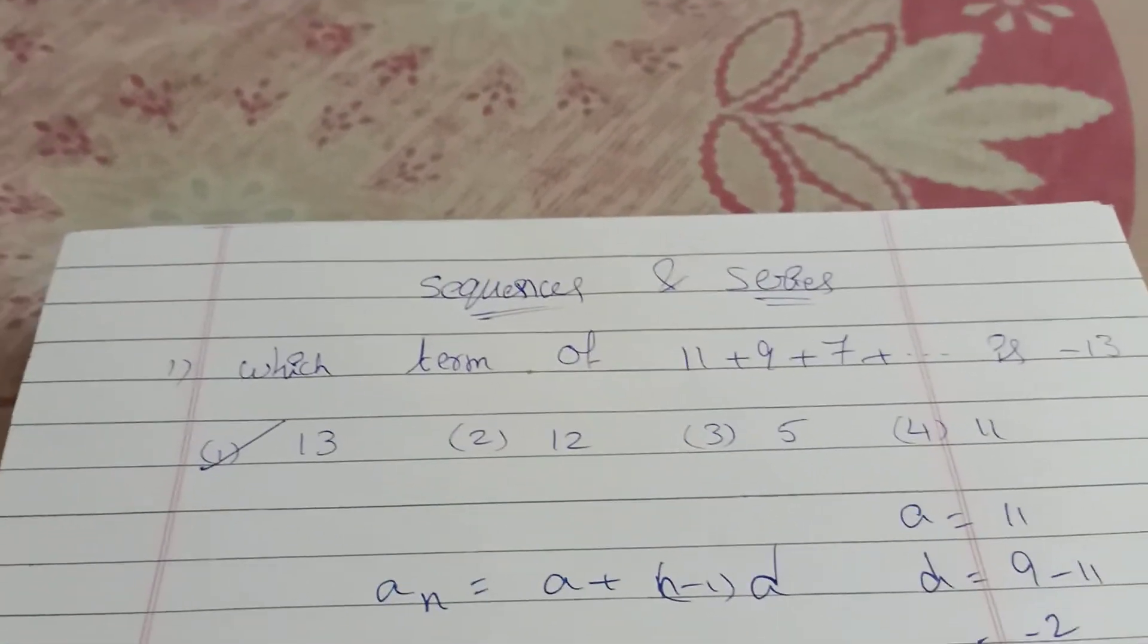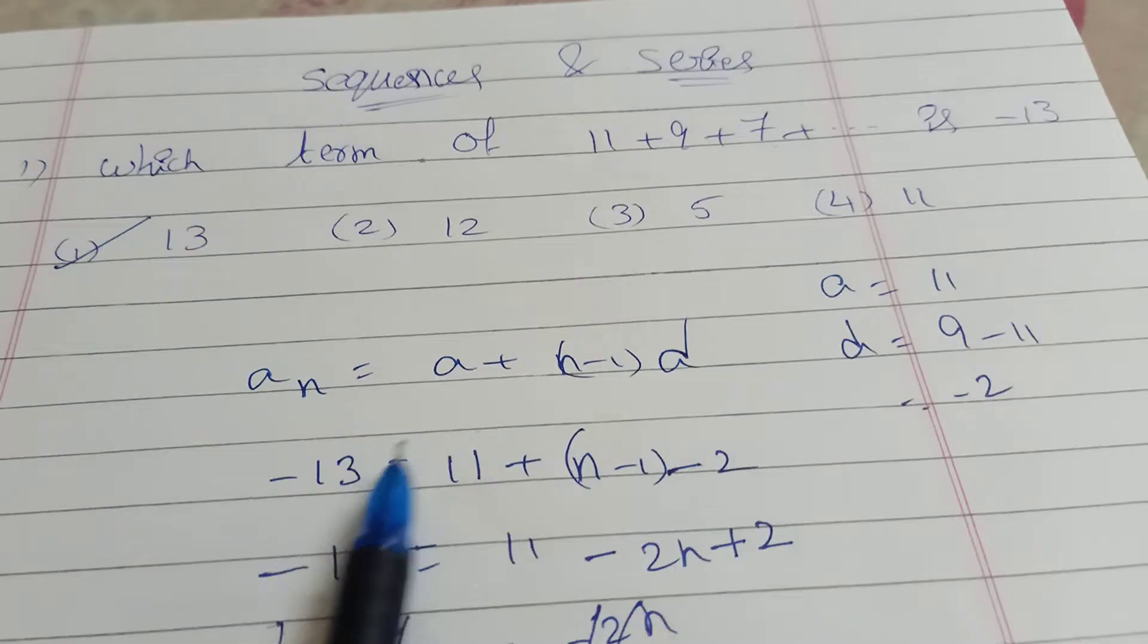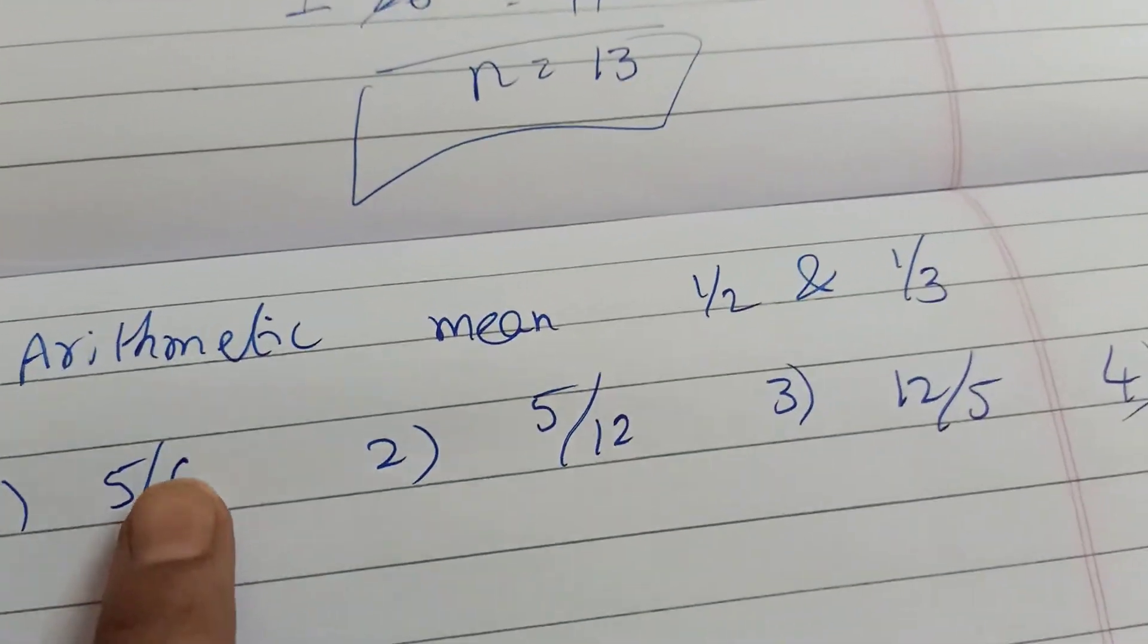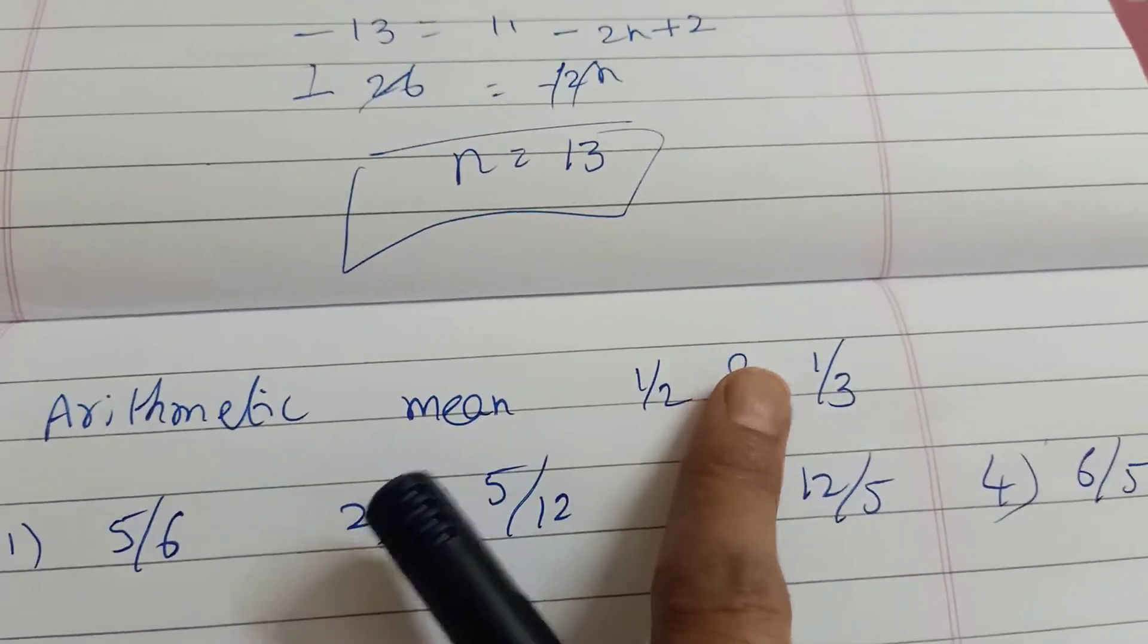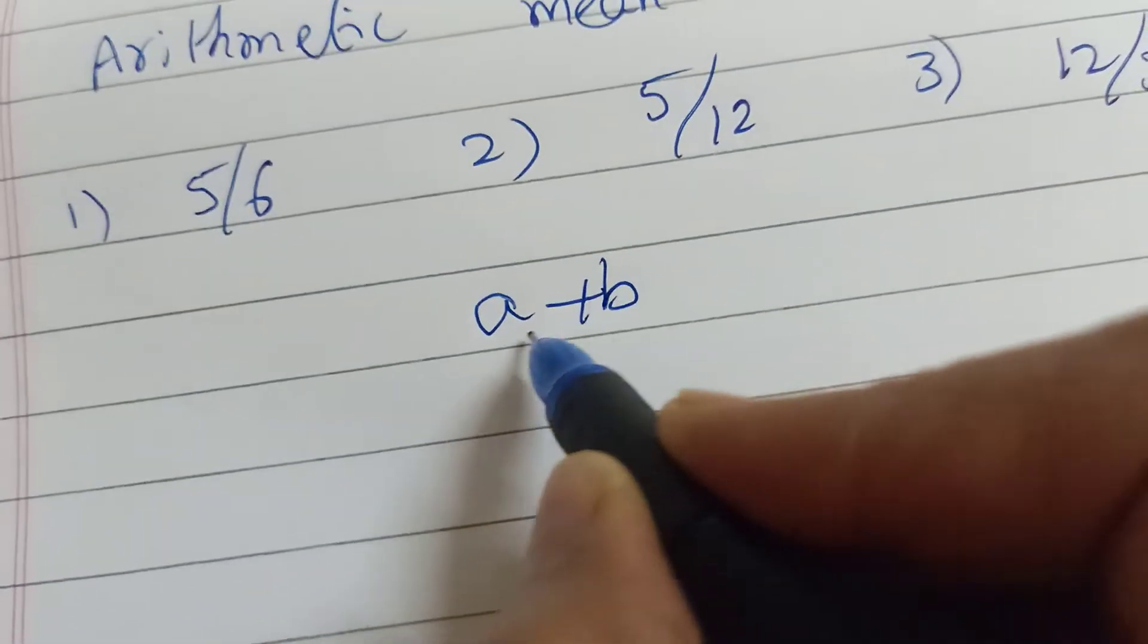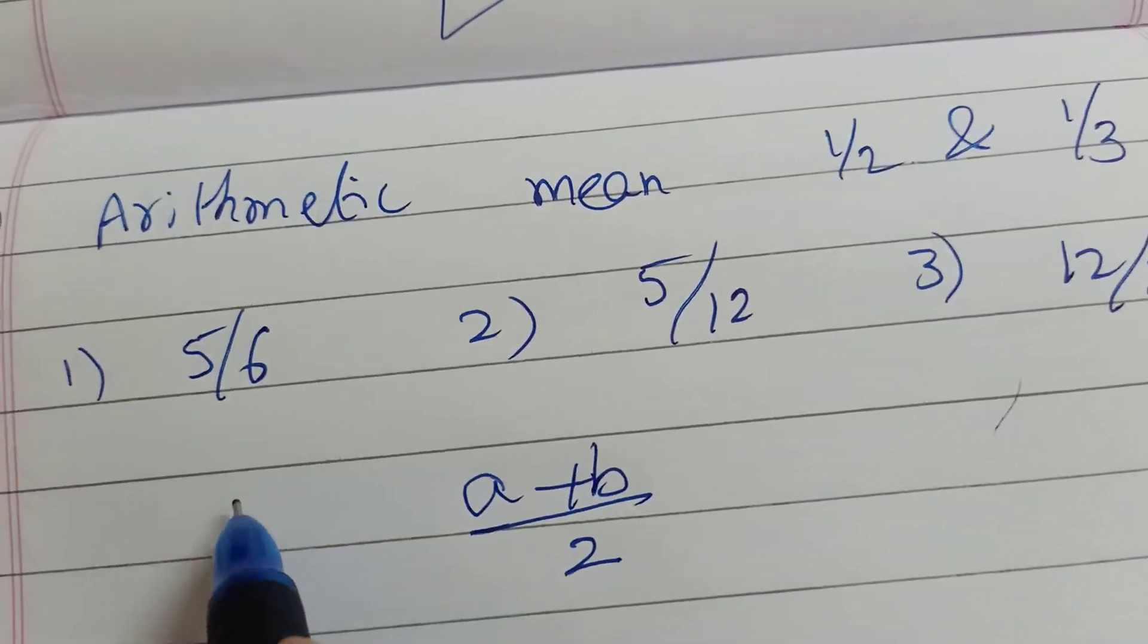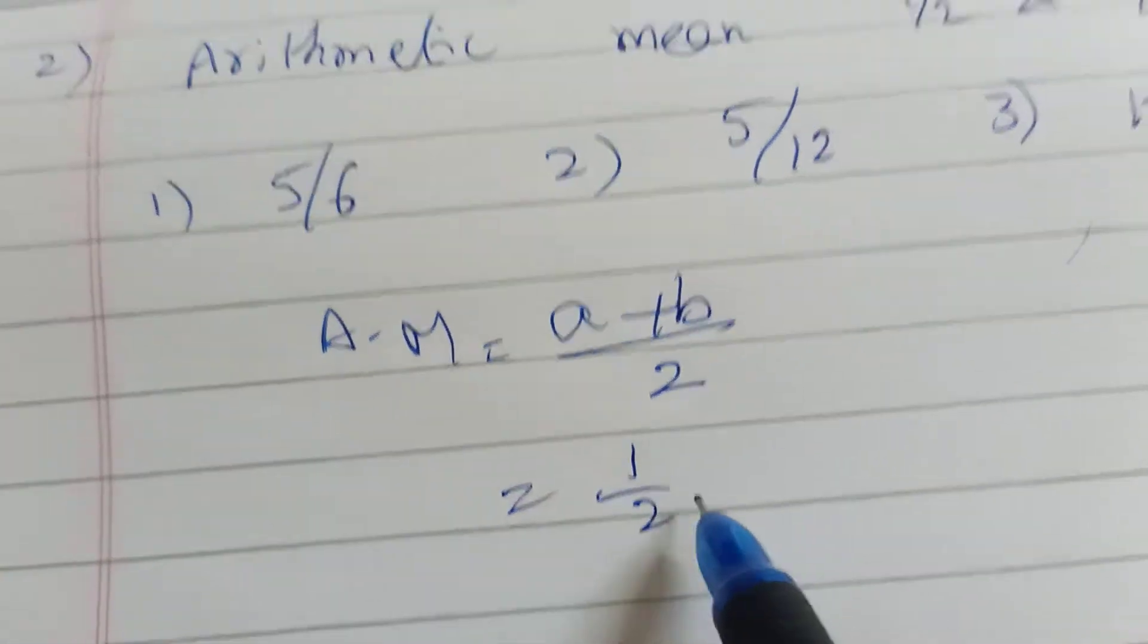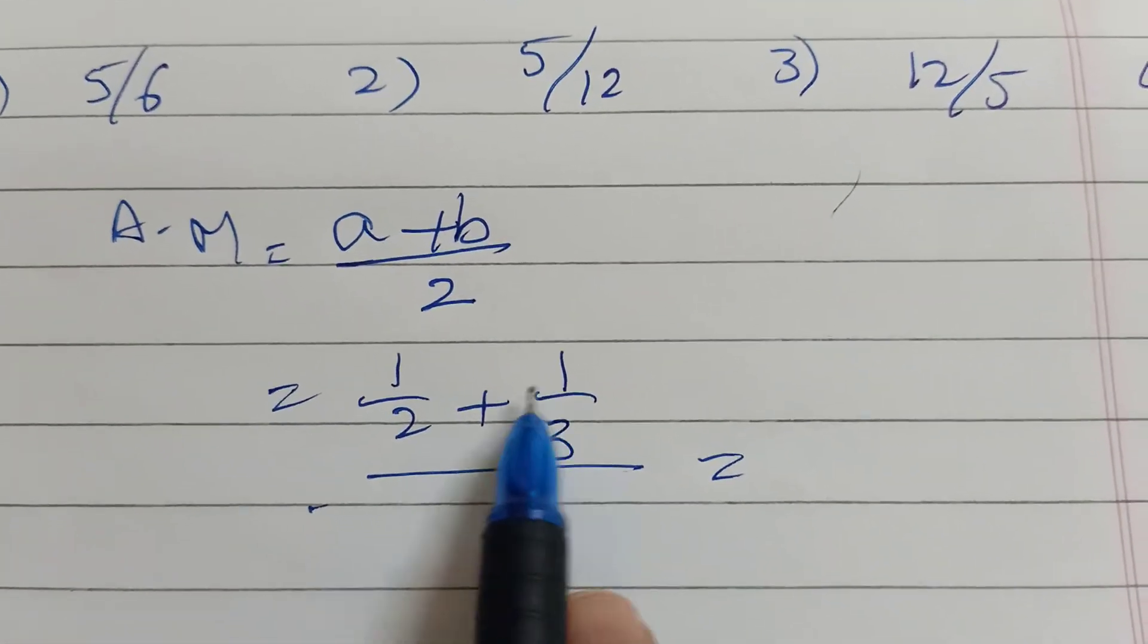Next problem: arithmetic mean of 1 by 2 and 1 by 3. The arithmetic mean formula is a plus b by 2. Here we have 1 by 2 plus 1 by 3, divided by 2.